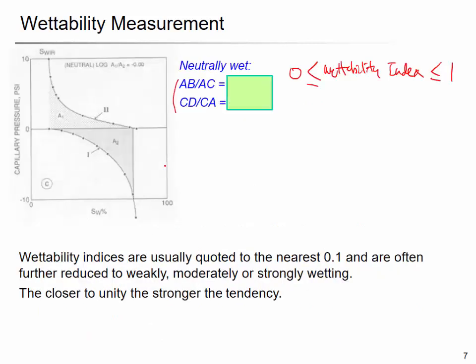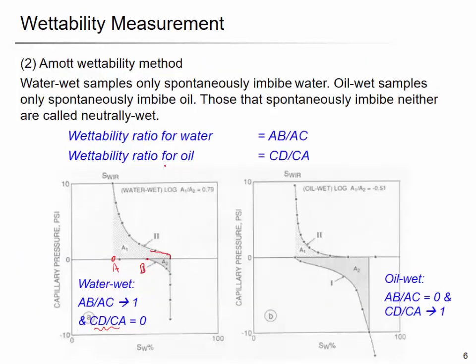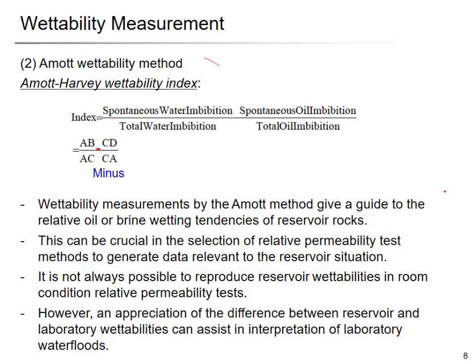Going back to the graph: for the water-wet case the Amott-Harvey index is about one minus zero, so it is close to one. For the oil-wet case, it is zero minus one, so it is close to minus one. A positive value means a strong tendency to be water-wetting; a negative value means oil-wetting. This modified wettability index combines the water-wet and oil-wet tendencies together.